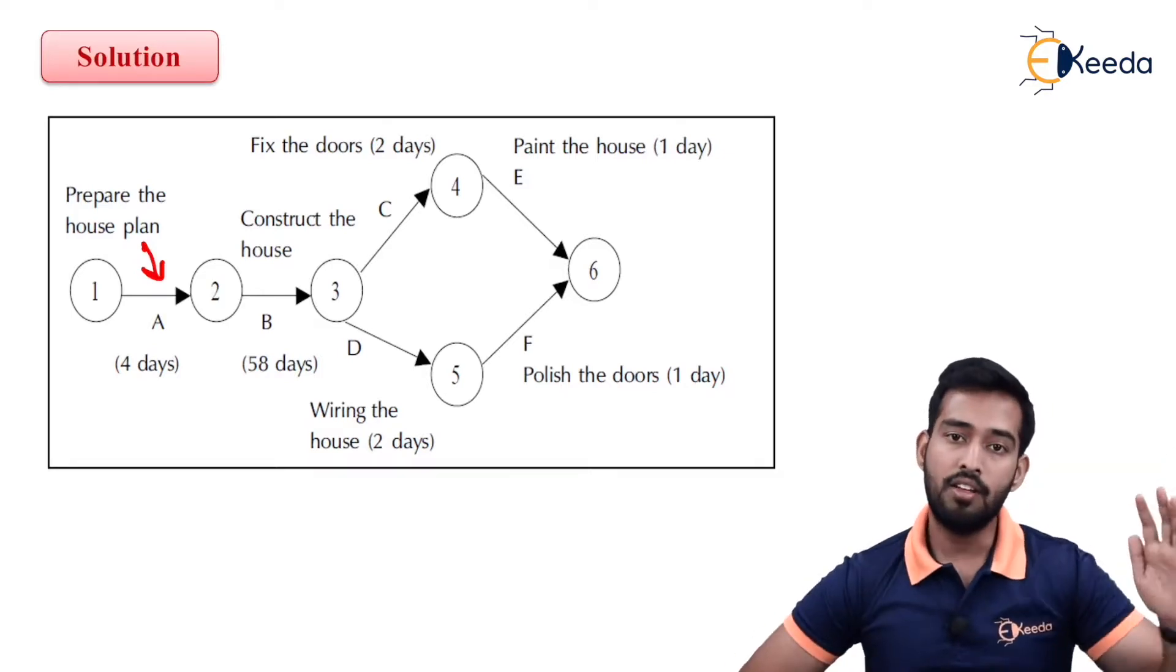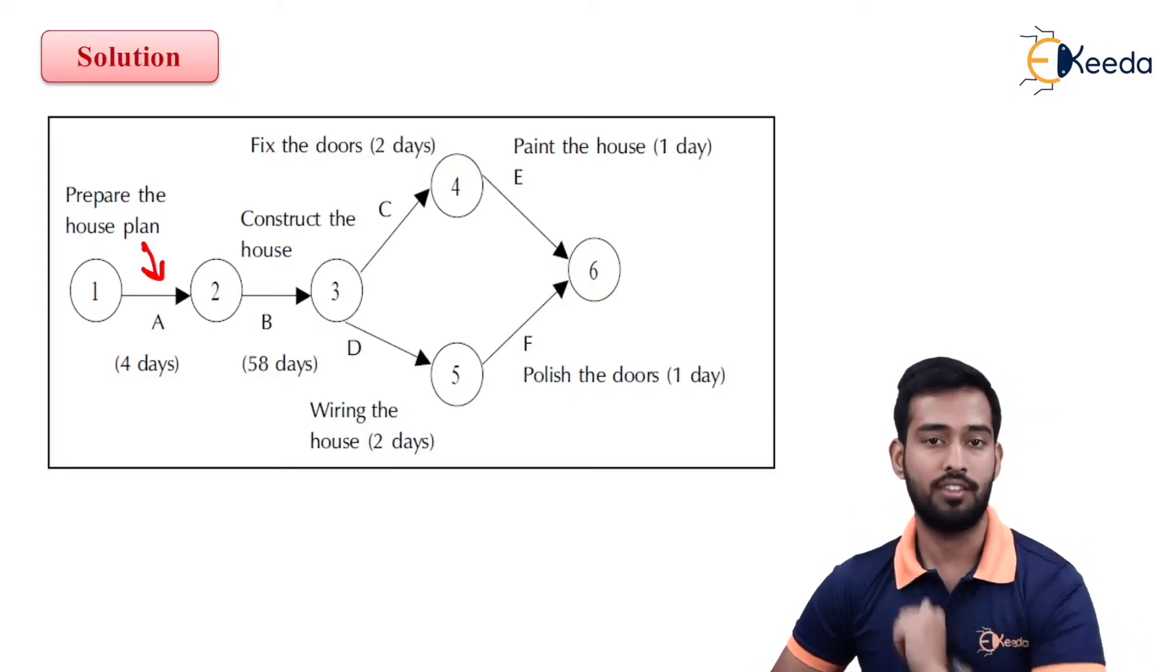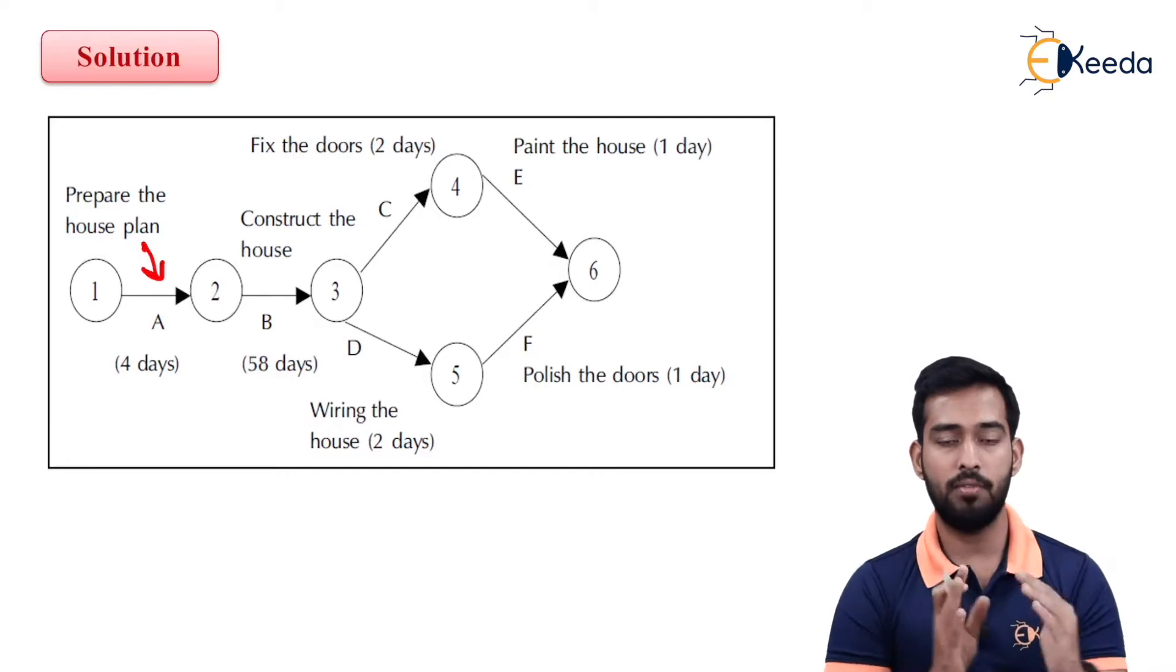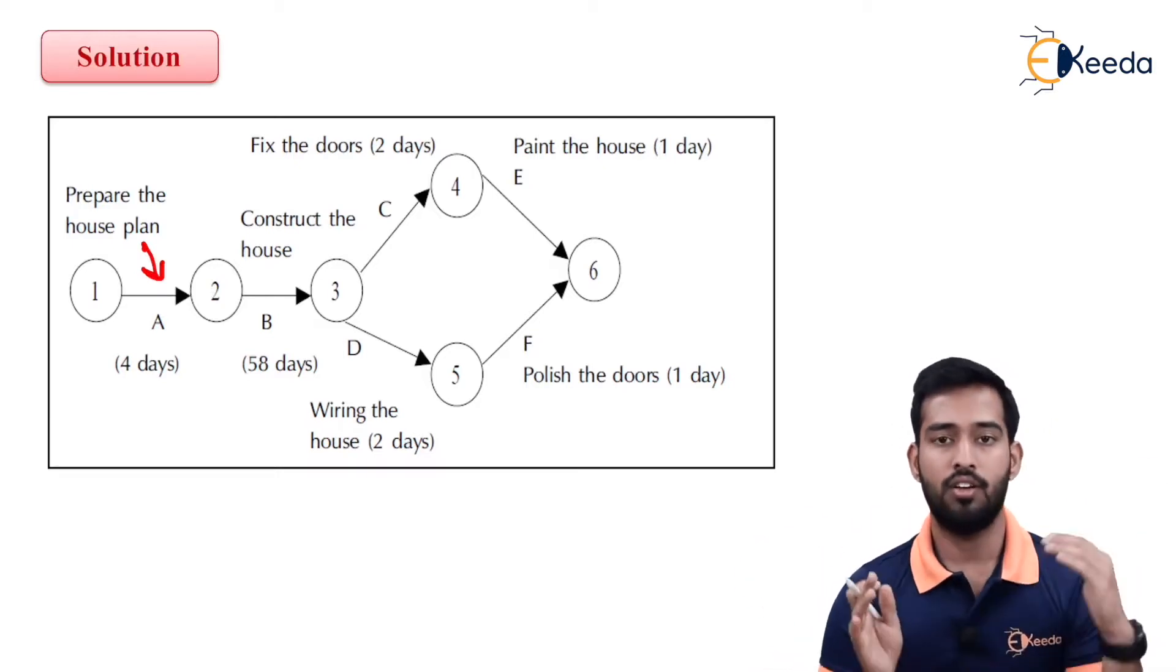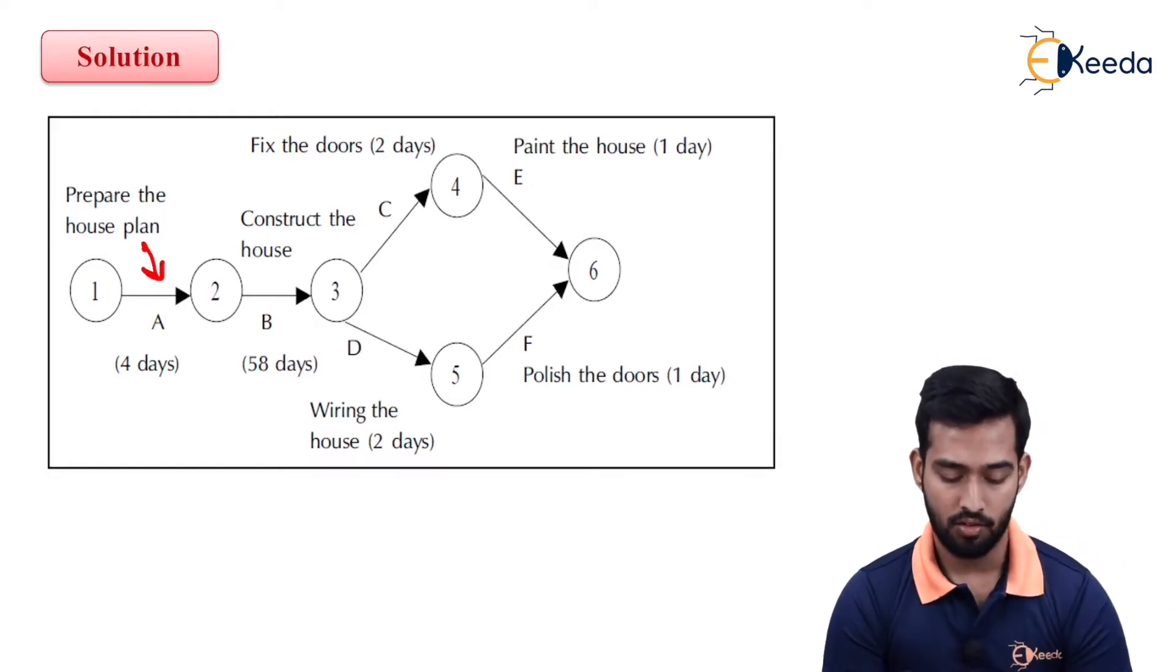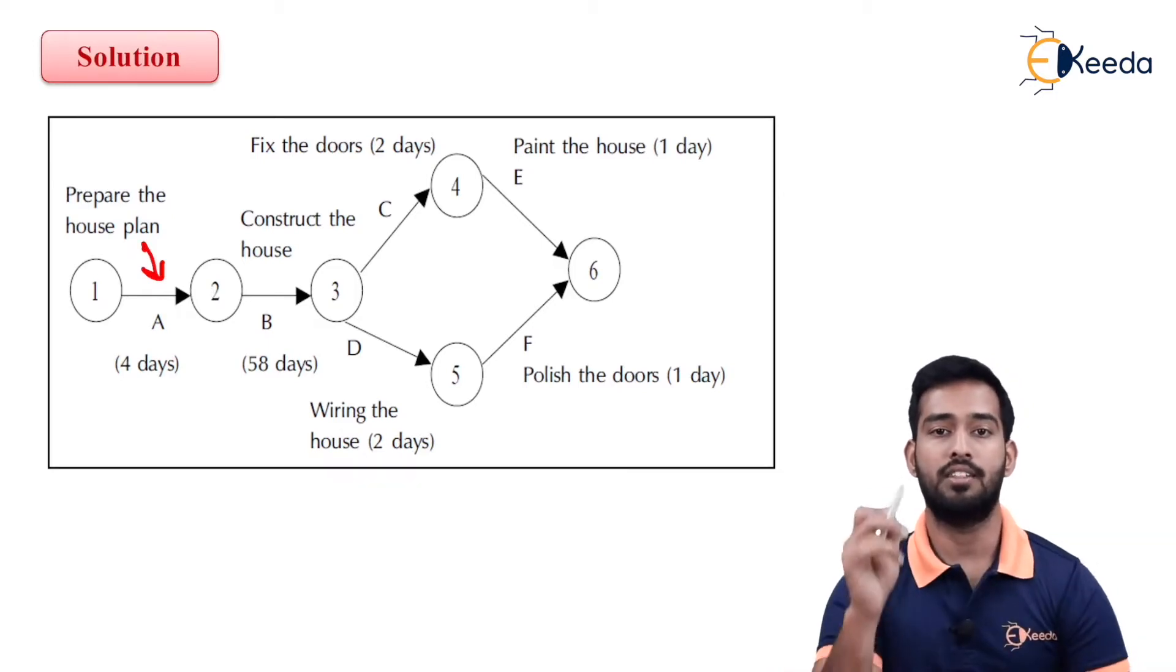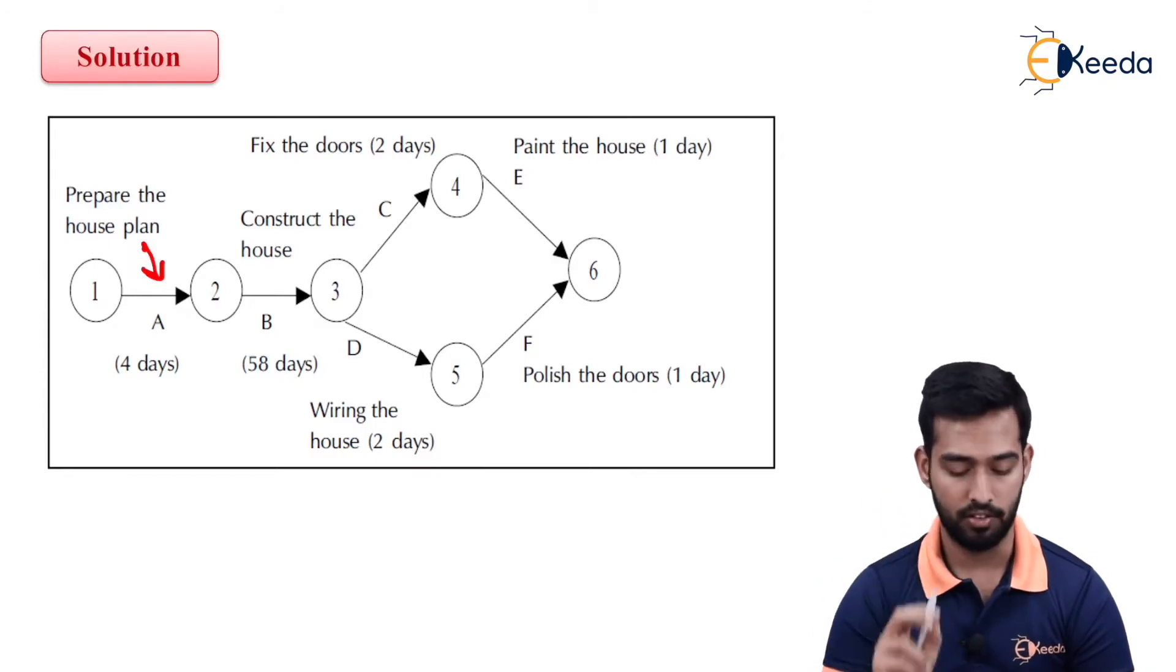Starting from one to six, numbering should be kept from left to right. As we can see, one, two, three, then from three it is splitting into two activities, then four, five. And then it is again converging into a single activity which is sixth. So event six is your end event. Don't keep four and five arrows open; it should go and merge at a single event. Starting event will be one and ending event will be one.